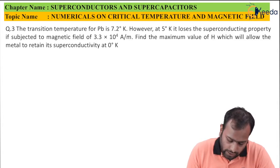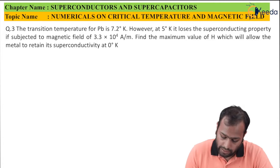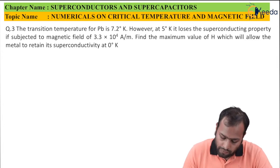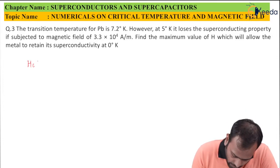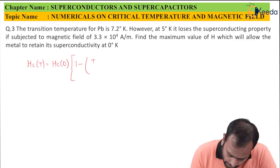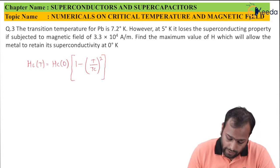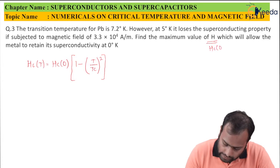The next question reads: the transition temperature for lead is 7.2 Kelvin. However, at 5 Kelvin it loses its superconductivity property if subjected to a magnetic field of 3.3×10⁴ ampere per meter. Find the maximum value of H which will allow the metal to retain its superconductivity at 0 Kelvin. We'll use the same formula Hc(T) = Hc(0) × [1 − (T/Tc)²], and we need to find Hc(0).